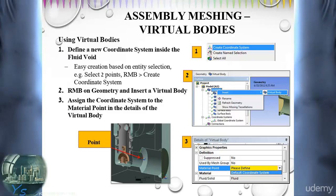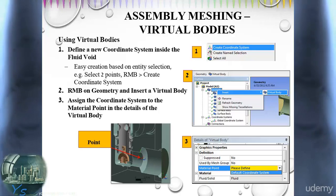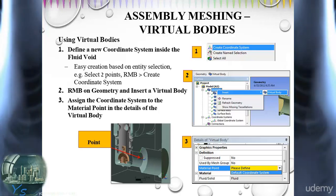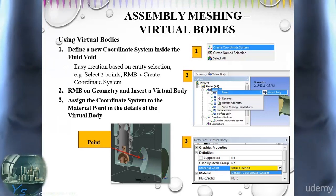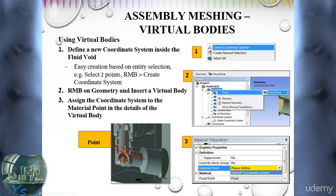Next, we right-click the geometry object in the outline to create the virtual body. Then, we select the user-defined coordinate system from the drop-down menu in the details of the selected virtual body.